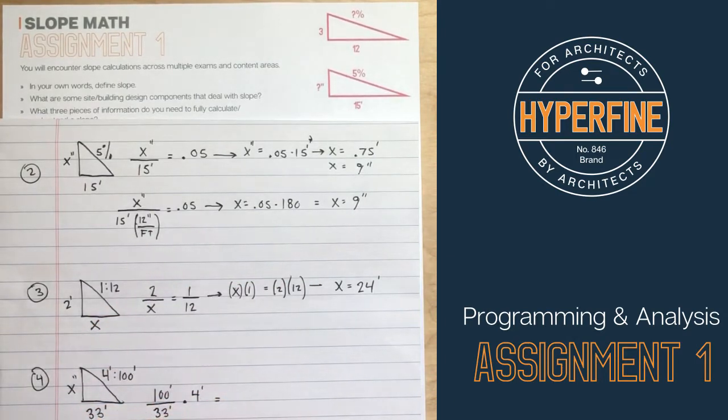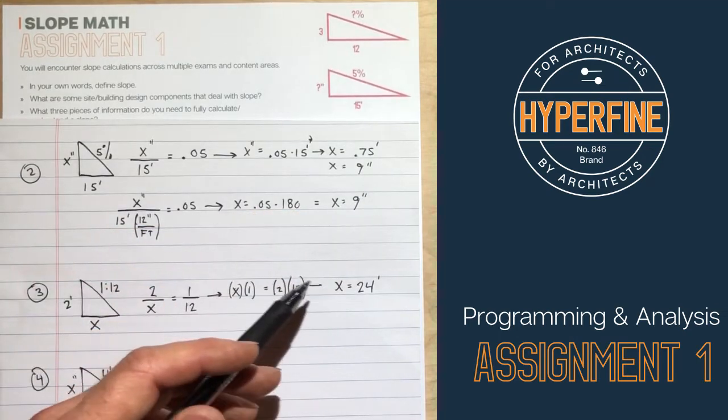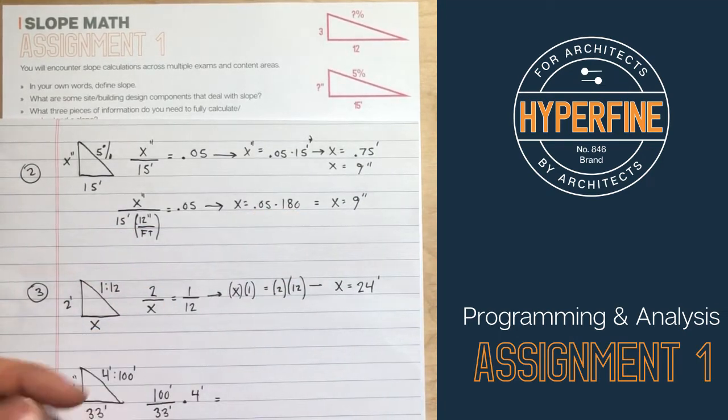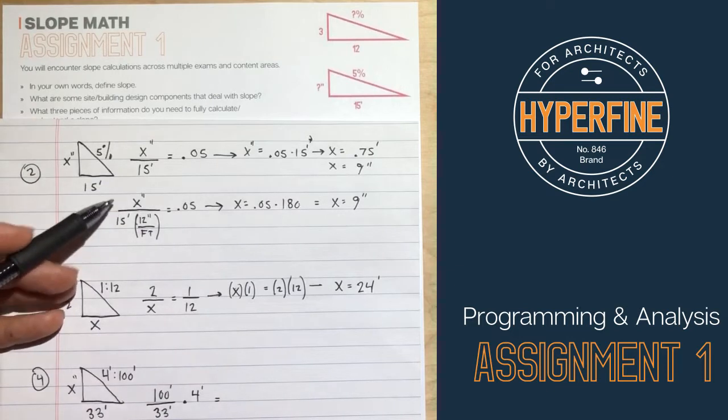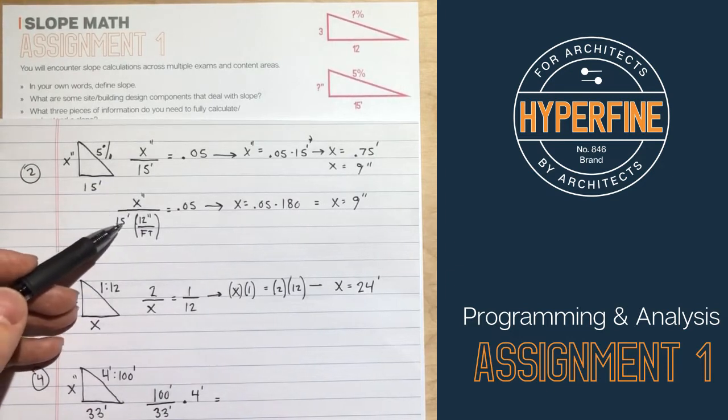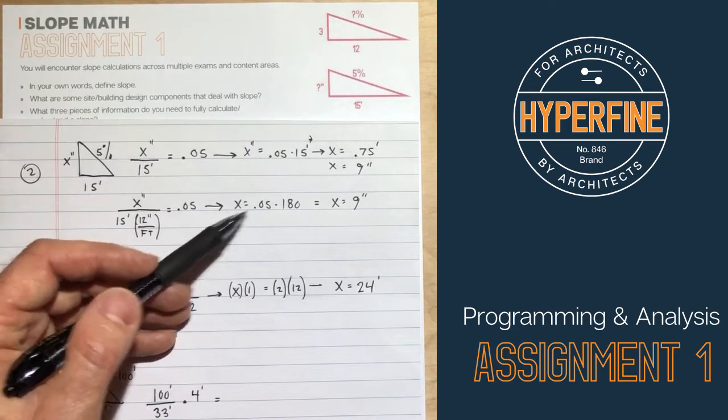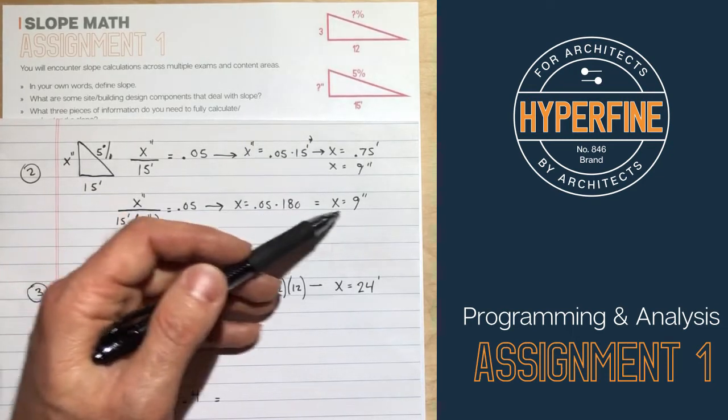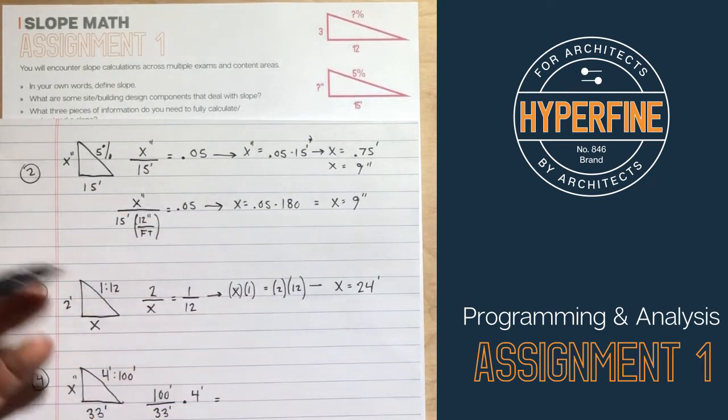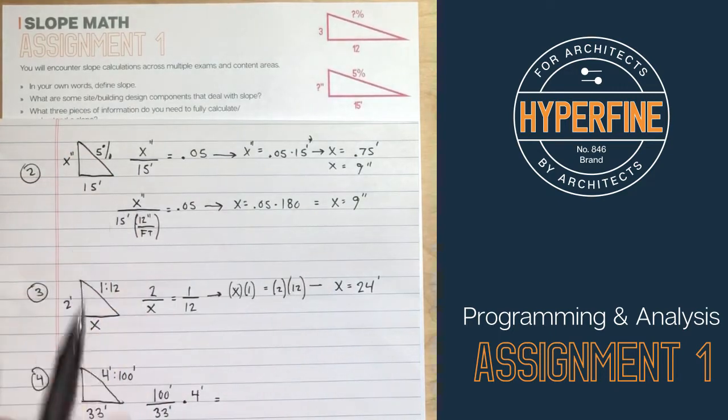If you think you might not remember to do that at the end, a lot of times I like to convert at sort of the earliest point possible. So I would rewrite it at the beginning as X inches over 15 feet. And then I would convert right away. So 15 feet times 12 inches gets us 180 inches. And so then I get to rewrite that as X equals 0.05 times 180. My answer comes out to 9. So then I don't have to worry about converting at the end because I know that I did it in the beginning.